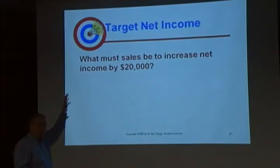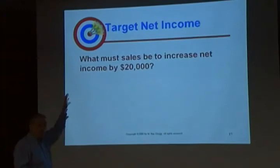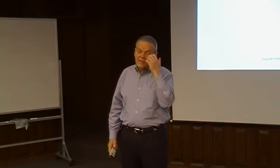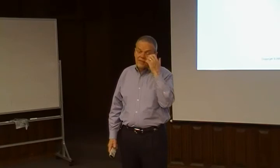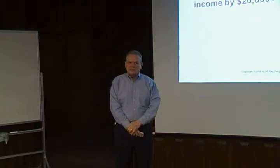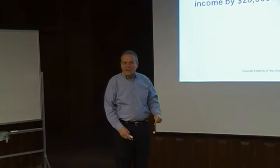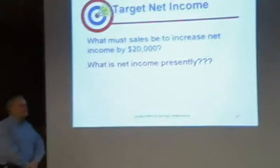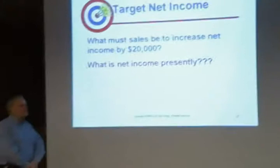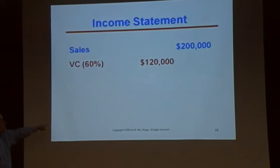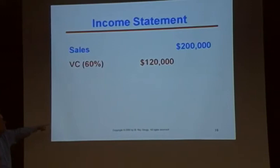Let's say you want to increase the current net income by $20,000. The problem is we don't even know what current net income is, so let's do an income statement. With current sales of $200,000, we incur 60% variable costs ($120,000) and $60,000 in fixed costs. Under these conditions, we're making $20,000 right now. So we want to increase net income by $20,000, from $20,000 to $40,000.